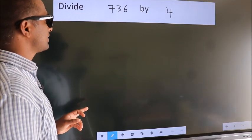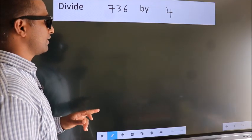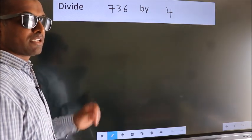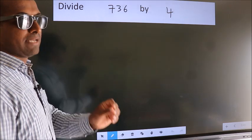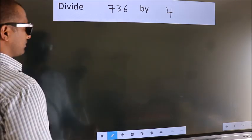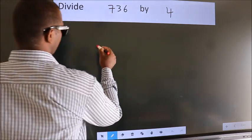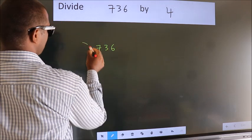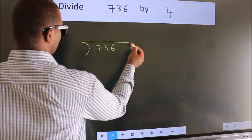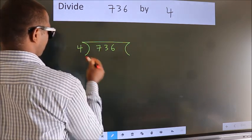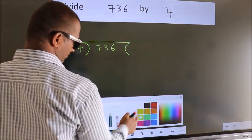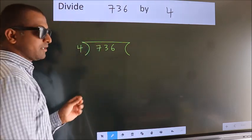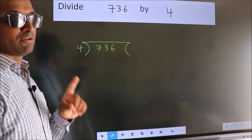Divide 736 by 4. To do this division, we should frame it in this way: 736 here, 4 here. This is your step 1.